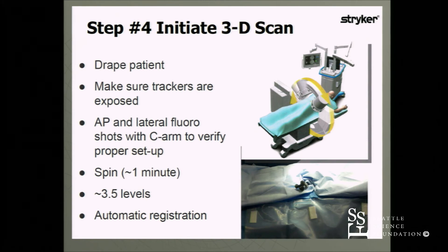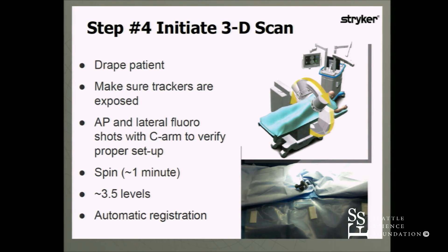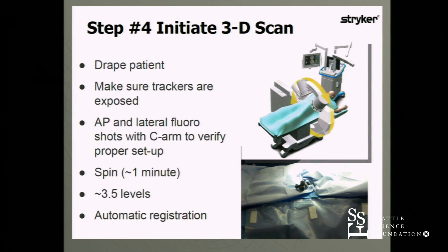The fourth step is to initiate the 3D scan. We drape the patient, cover the tracker, get an AP image to confirm we're looking at the correct area, swing to lateral to confirm lateral coverage, and then initiate the spin to make sure the machine can rotate freely without obstruction. The spin on average takes about two minutes, and during that time everyone steps out of the room so no one is exposed to extra radiation.